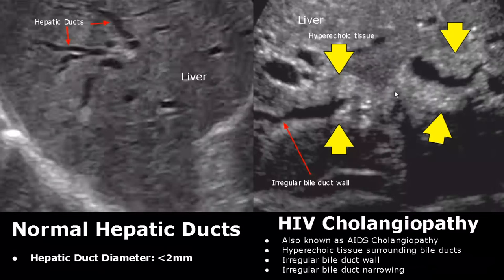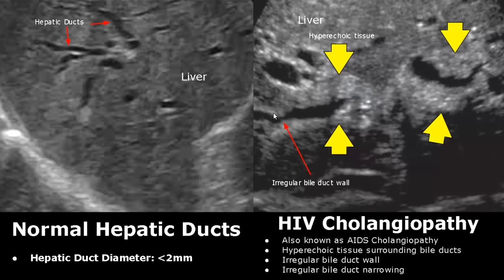HIV cholangiopathy, or AIDS cholangiopathy, is seen in AIDS patients. Hyperechoic tissue is seen around the bile ducts, and the bile duct walls are irregular. There is also irregular bile duct wall narrowing.